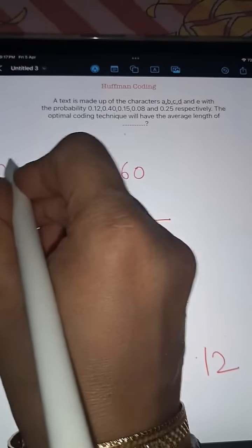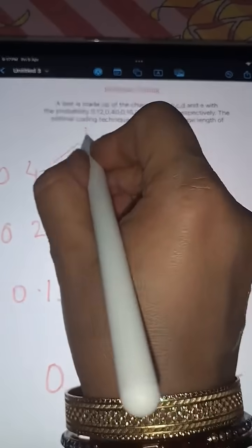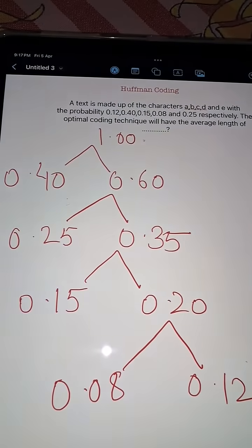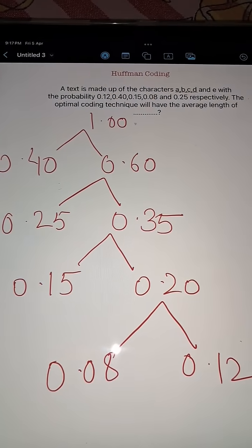Now the last one is left as 0.40. Now add it again and you will be getting at the end 1.00. So at the end you are going to get 1.00 in this ladder.